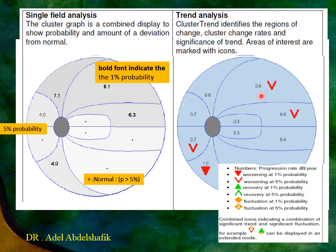The worsening signs indicate deterioration with a probability of five percent or one percent. You can see an example of trend analysis — not just for one location but for a group of locations. Here is an example of event analysis and here is an example of trend analysis.